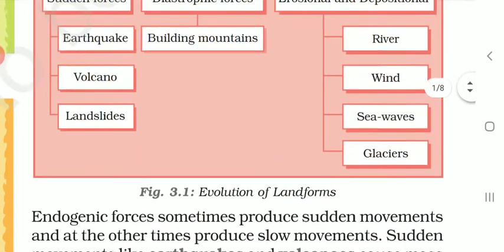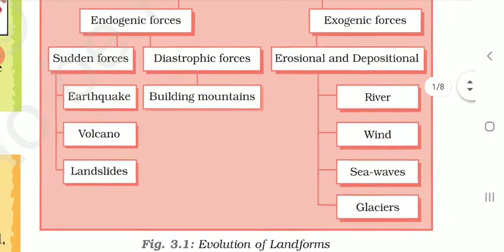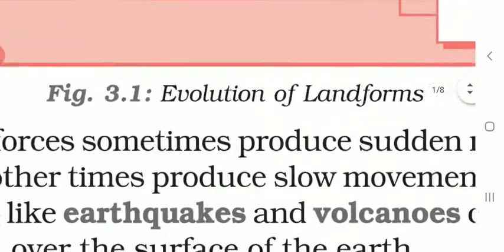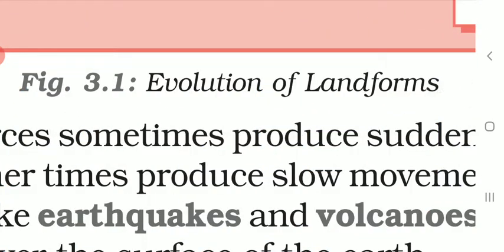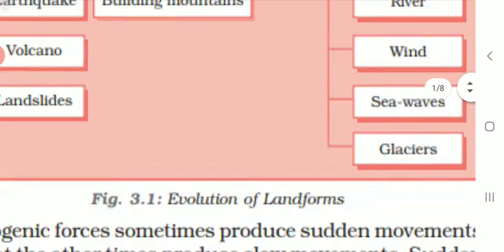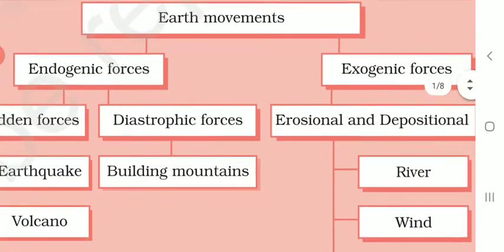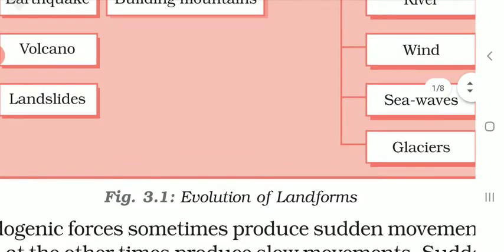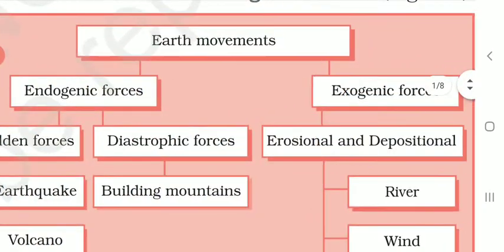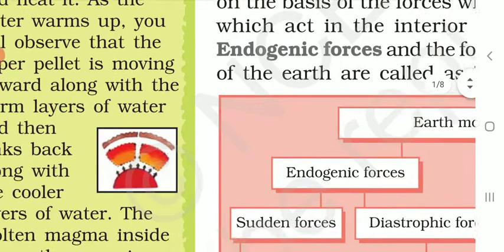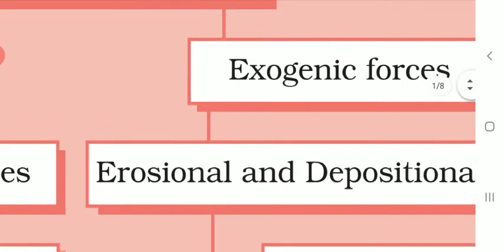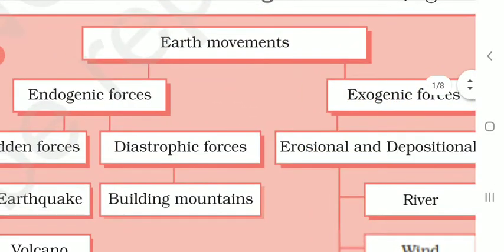The earth's movements are categorized in a tree diagram — figure 3.1 — the evolution of landforms, which explains how landforms are forming on the surface of the earth. There are two kinds of forces: endogenic forces and exogenic forces, and both are causing changes.